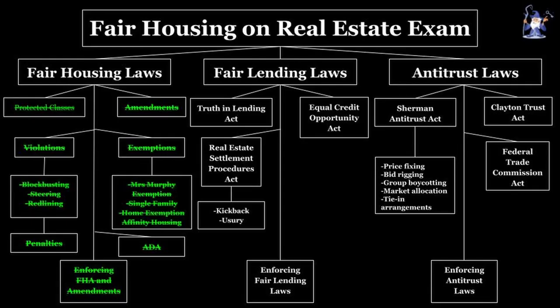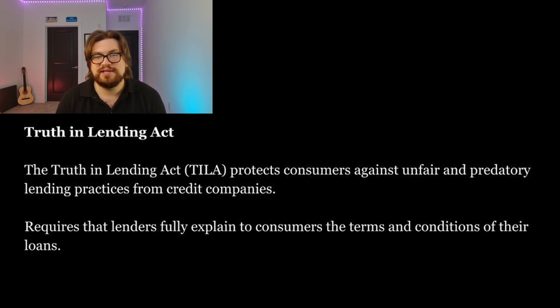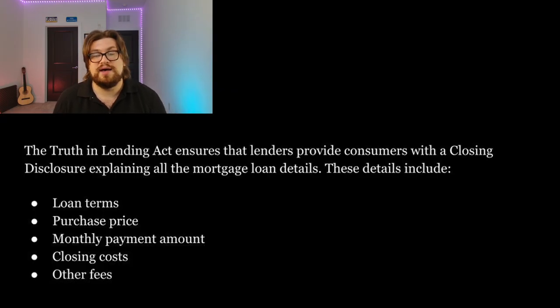Now that we've covered the specific Fair Housing Act and everything that accompanied it, we have to talk about fair lending, which is a significant chunk of fair housing. Fair lending starts with the Truth in Lending Act. The Truth in Lending Act protects consumers against unfair and predatory lending practices from credit companies. This act, passed in 1968, requires that lenders fully explain to consumers the terms and conditions of their loans. It prohibits unfair credit practices designed to put more money in mortgage brokers' pockets. The Truth in Lending Act ensures that lenders provide consumers with a closing disclosure explaining all mortgage loan details, including loan terms, purchase price, monthly payment amount, closing costs, and other fees.